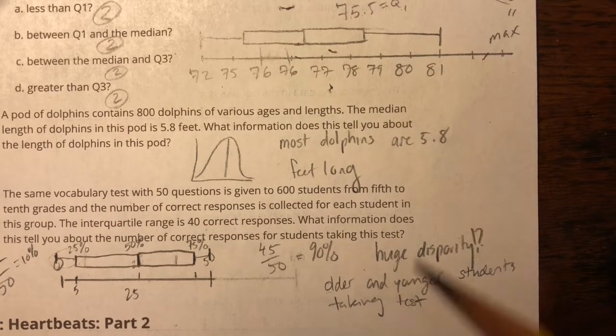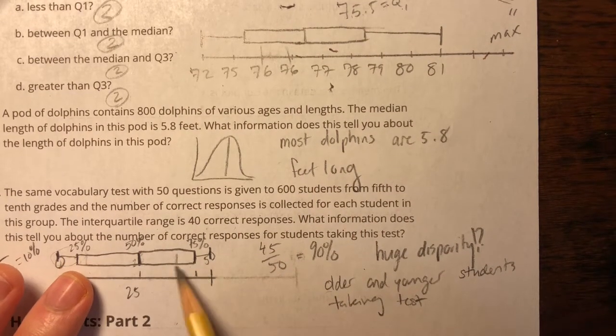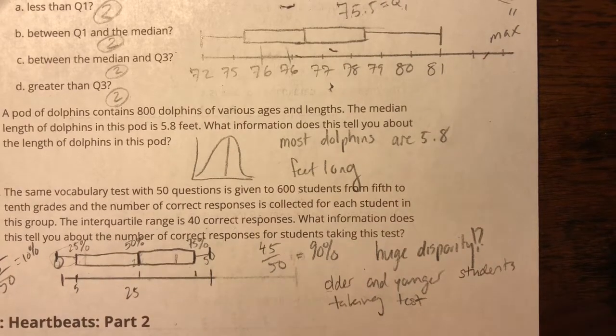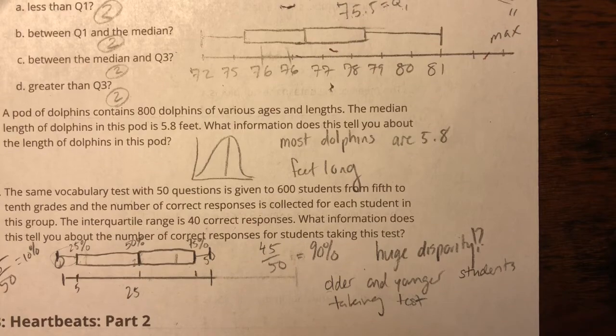All right. So knowing that IQR though, that information was enough to tell me that we've got a very large range of possible answers that students who are taking this test might respond with. All right. That's all for 5.2.